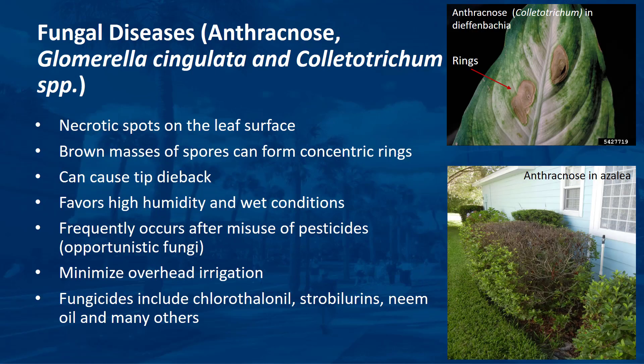Anthracnose is characterized by necrotic spots on the leaf surface. Under humid conditions, brown masses of spores can form into concentric rings. Necrotic spots eventually become dark brown and the leaves may fall off. Anthracnose can also cause tip dieback. The disease favors wet conditions and high humidity in the summer months and frequently occurs after misuse of pesticides has caused tissue damage. Minimize overhead irrigation and exposure to rainfall. Fungicides that can effectively control anthracnose include chlorothalonil, strobilurins, and neem oil, among many others.